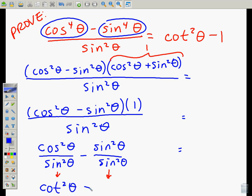We're subtracting sine squared over sine squared, numerator and denominator are the same, so that's equal to one. And we want that to be equal to cotangent squared theta minus one.